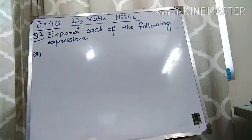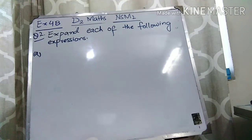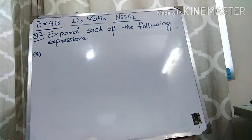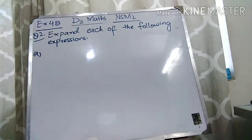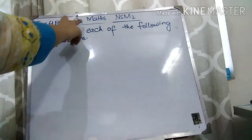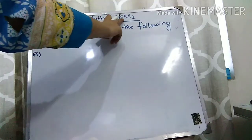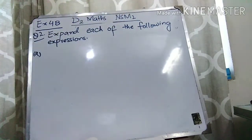Assalamualaikum students, how are you all? I hope that you all are doing great. Welcome to your channel, Maths D1, D2, Scientific Academy. Today our lecture is related to Chapter 4, which is Expansion and Factorization of Algebraic Expressions. I am going to explain Exercise 4B. Your book is D2 Maths and Lesson 2, New Syllabus Mathematics 2.